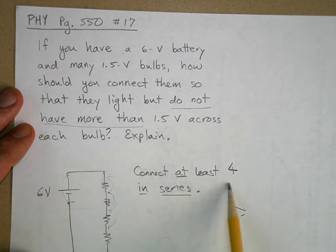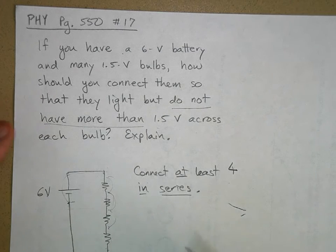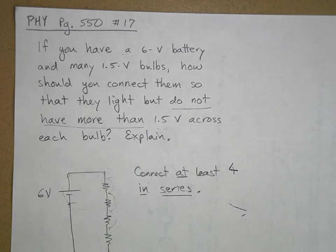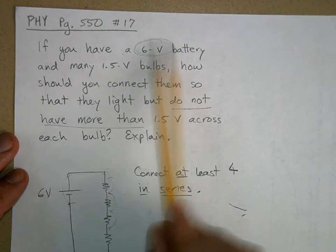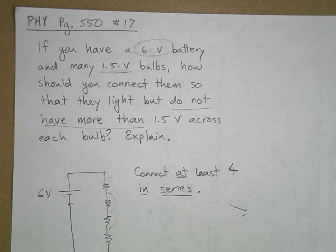So you must connect at least 4 in series. And remember that resistors in series divide up the voltage. So here we had 6 volts, but we could only have 1.5 volts, so we had to divide the voltage up.